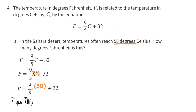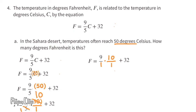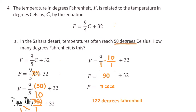Now the equation reads F equals 9 over 1 times 10 over 1 plus 32, which is the same as F equals 9 times 10 plus 32. So F equals 9 times 10, which is 90, plus 32. The degrees Fahrenheit equals 90 plus 32, which is 122 degrees Fahrenheit. So when the desert is 50 degrees Celsius, it's also 122 degrees Fahrenheit.